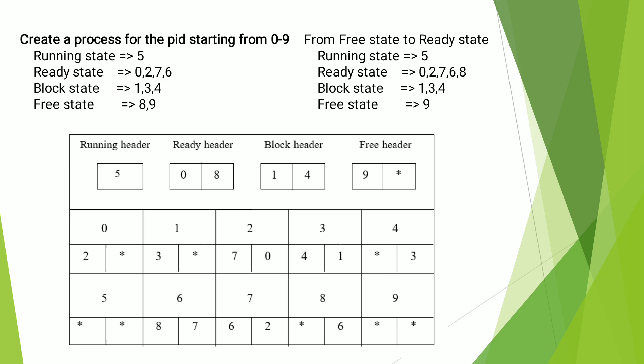The Process Control Block has the Process ID — here we are applying process IDs 0 to 9. Process state means running state, ready state, block state, free state. Then priority — processes 0 to 6, giving the first priority to zero. All information will be stored here. In creating a process, from the free state it should be moved on to the ready state.